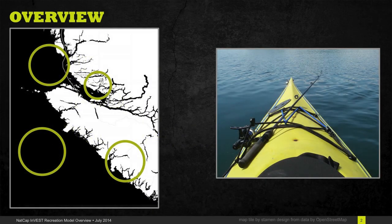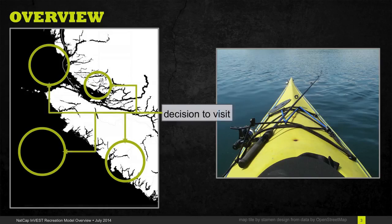When we talk about recreation we're talking about activities that people do in their leisure time. For example people might like to go hiking or kayaking or fishing, and we need models that can help us determine where those people go and what influences their decision to go to a particular place.